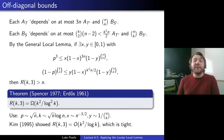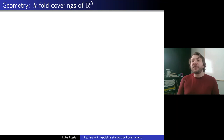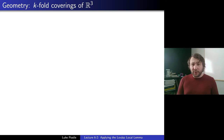That concludes all I wanted to say about Ramsey numbers. Now we'll move on to geometry. Our last result of the day is a nice pulling-together of these ideas. We started with basic property B, then multicolored sets where we showed off a compactness argument, and a little of the general Local Lemma on Ramsey numbers. Now let's do something in geometry.